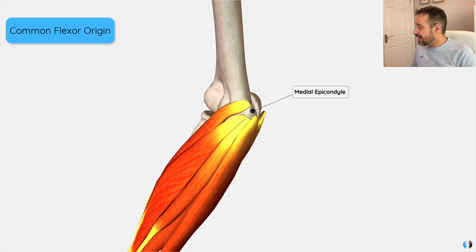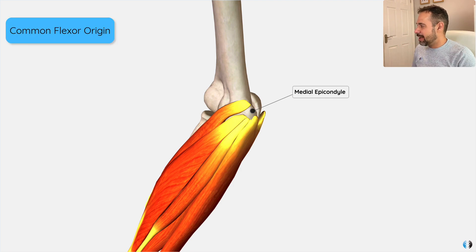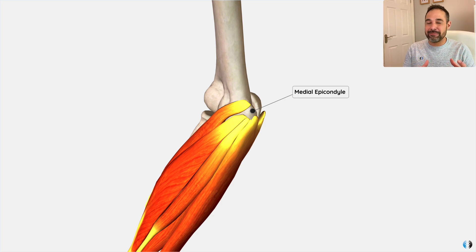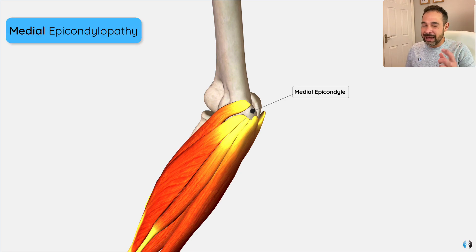That common flexor origin inserts into the medial epicondyle of the elbow — which is exactly why the medical term for golfer's elbow is called medial epicondylopathy. So that's the anatomy.